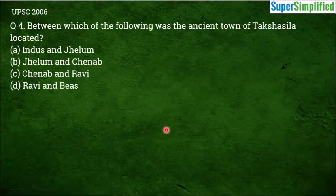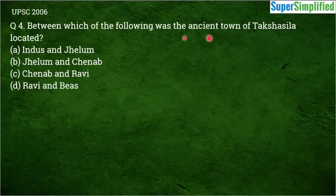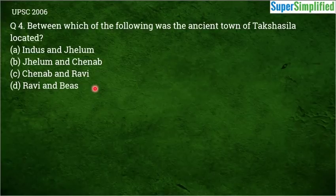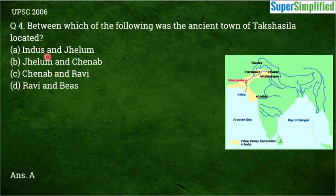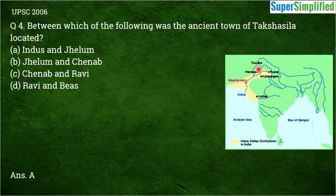Question number 4, from UPSC 2006: Between which of the following rivers was the ancient town of Taxila located? Options: Indus and Jhelum, Jhelum and Chenab, Chenab and Ravi, or Ravi and Beas. The correct answer is A — Indus and Jhelum. On the map you can see Taxila is located between the Indus river on top and the Jhelum river. After Jhelum comes Chenab, then Ravi, then Beas, and then Sutlej.